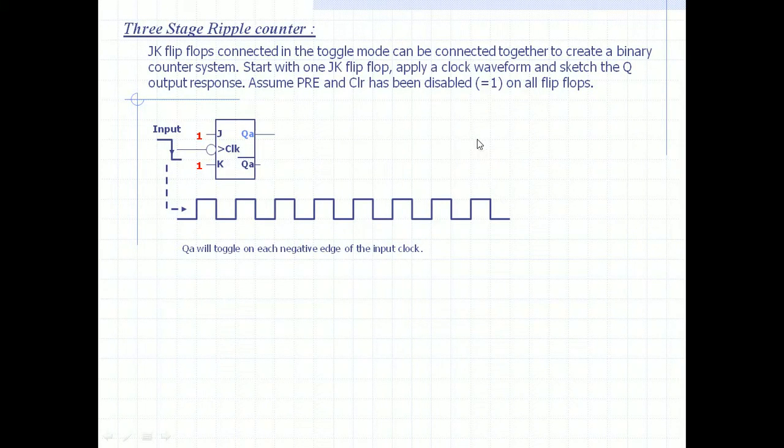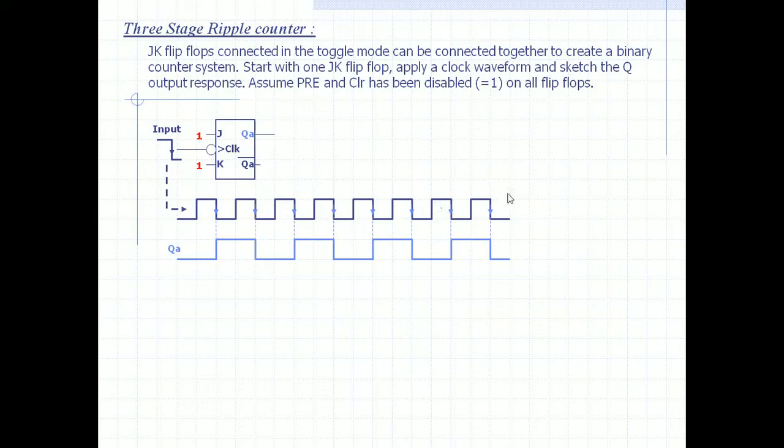This is what we learned about JK flip-flops. These are all falling edges, and only then will QA toggle. Let us assume QA is zero first. QA will toggle, meaning it changes - transition takes place from zero to one and one to zero, only on these falling edges of the input clock.